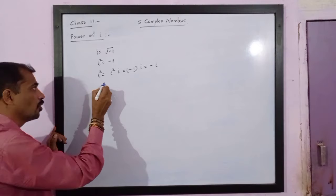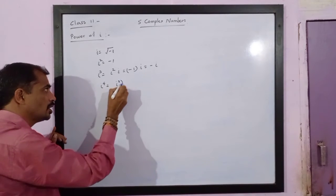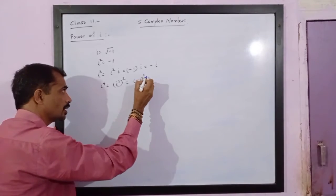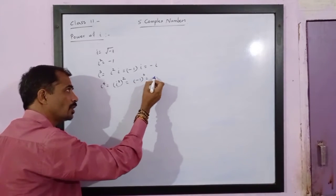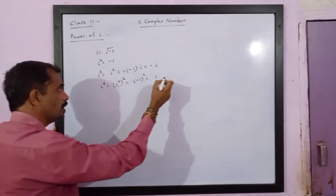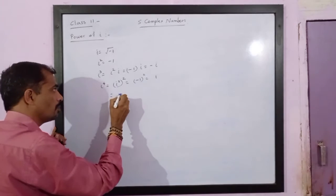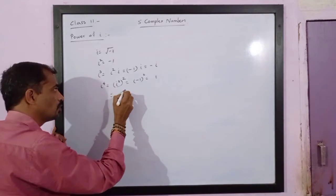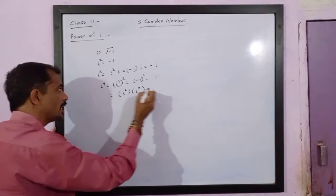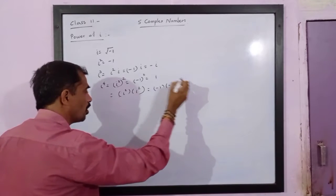Now i raised to 4. i to the 4 is equal to i squared squared, that is equal to minus 1 squared. That means it equals positive 1. Alternatively, it can be written as i squared times i squared, which is i to the 4, equal to minus 1 times minus 1, which is positive 1.